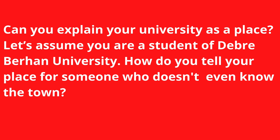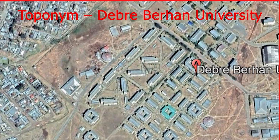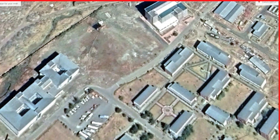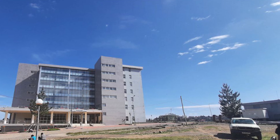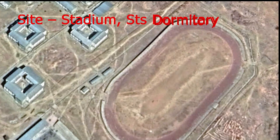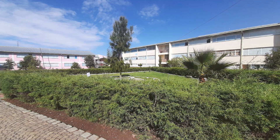Let's have an example. Can you explain your university as a place? Let's assume you are a student of Debre Burhan University. How do you tell your place to someone who doesn't even know the town? Here, the toponym is Debre Burhan University. The site involves mentioning different features within the university, both human and natural features, such as postgraduate building, admin block, student's dormitory, stadium, open spaces, and greeneries, etc.